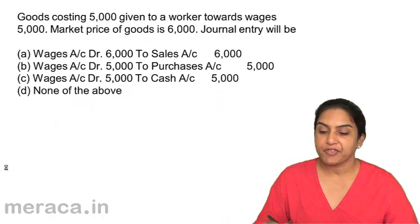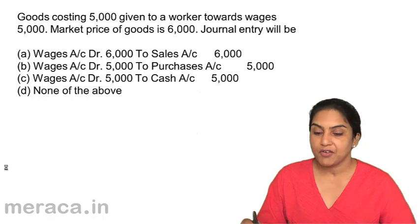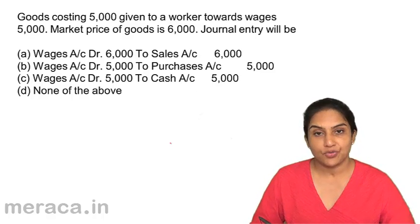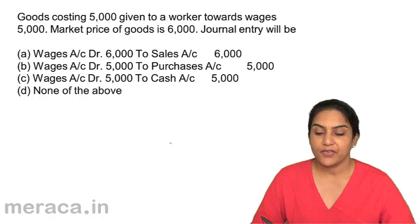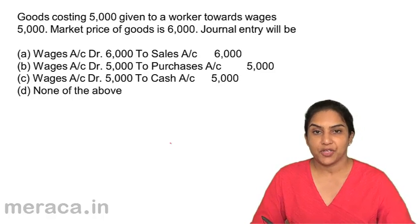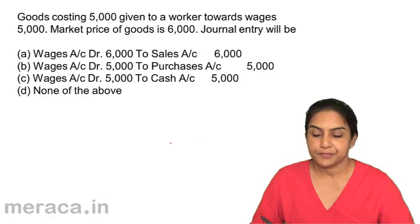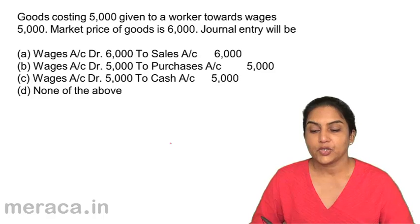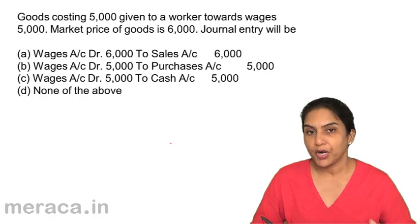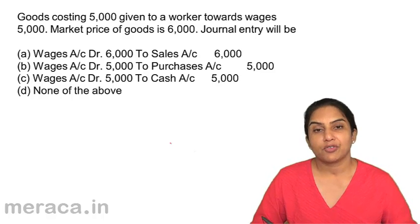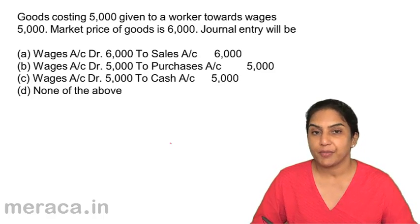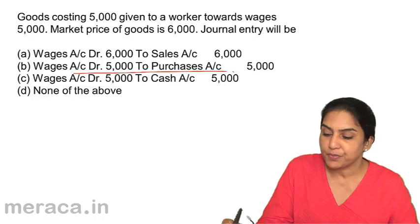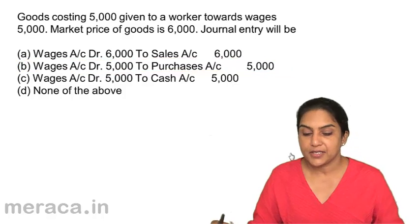Question 14: Goods costing $5,000 given to a worker towards wages; market price of goods is $6,000. Journal entry will be — A: Wages debit $6,000 to sales $6,000, B: Wages account debit to purchases $5,000, C: Wages account debit $5,000 to cash $5,000, D: none of the above. When goods are given, purchases is credited because goods were bought as purchases to sell — when not sold, remove them from purchases. So the entry is Wages account debit to purchases $5,000. Correct answer: option B.